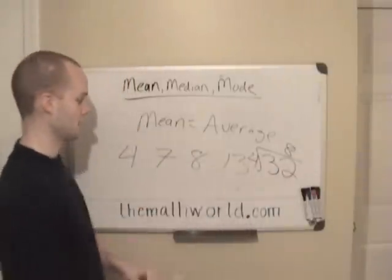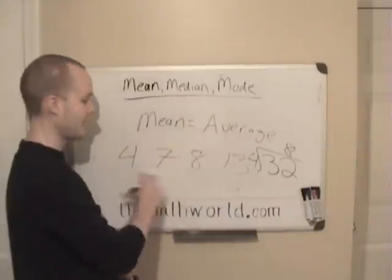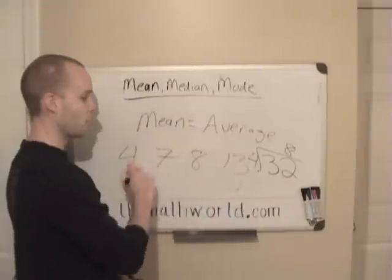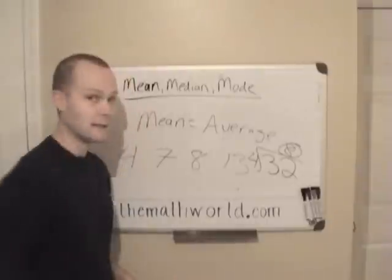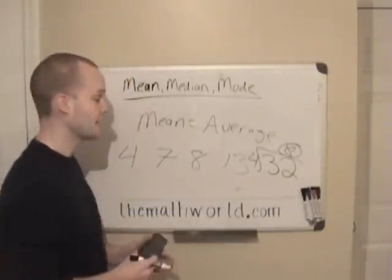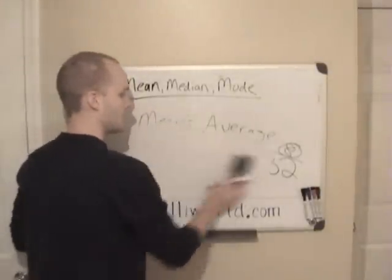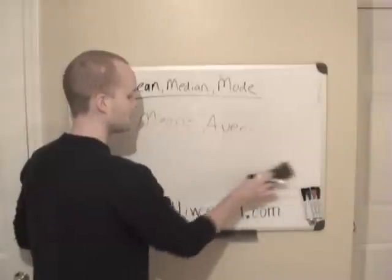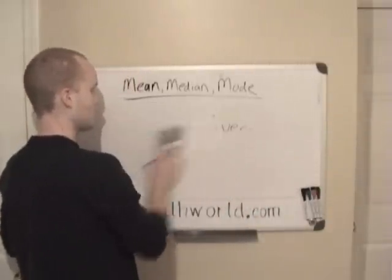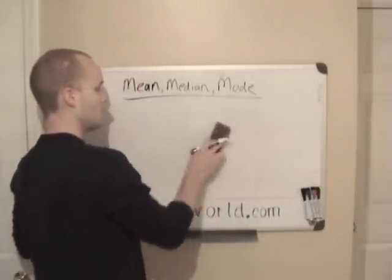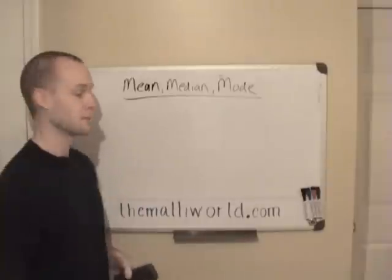32 divided by 4 is 8 — 4 goes into 32 eight times. So the mean or the average of these 4 numbers is 8. And that's how you find the mean. Now the median — the median is the middle number.